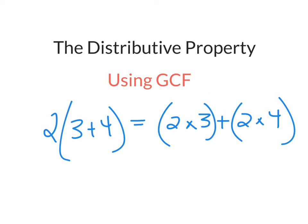We have our factored form, which is when the number that they have in common — that the expression has in common, the two sets of parentheses have in common — is pulled out in the front. And then we also have our expanded form, when our shared number is placed inside both sets of parentheses and then multiplied by the other numbers.